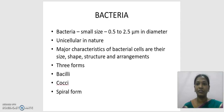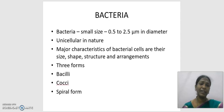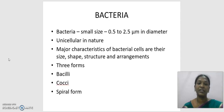First, we are going to see about bacteria. Bacteria are very small in size, ranging from 0.5 to 2.5 micrometers in diameter. They are usually unicellular, containing only one single cell. Bacteria may be characterized by their size, shape, structure, and arrangements, and they usually have three forms.